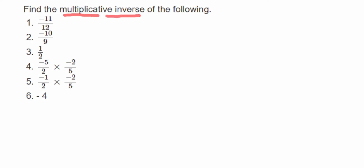Multiplicative inverse means — let me take a small example. Suppose I have a number 1/5, it's a rational number. What should I multiply to 1/5 to get the answer 1? Here, 1 is the multiplicative identity — the ultimate answer has to be 1. The number we multiply to the given number becomes its multiplicative inverse.